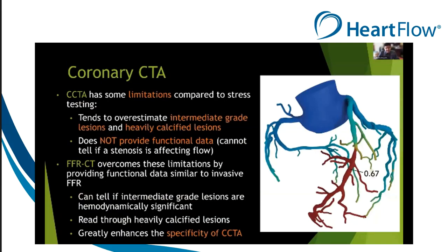That said, coronary CTA has some limitations compared to stress testing. It tends to overestimate intermediate-grade lesions as well as heavily calcified lesions, and crucially it does not provide functional data — it cannot tell if a stenosis is affecting flow. FFRCT overcomes these limitations by providing functional data similar to invasive FFR. With FFRCT, we can tell if an intermediate-grade lesion is hemodynamically significant and can read through heavily calcified lesions, enhancing the specificity of coronary CTA.